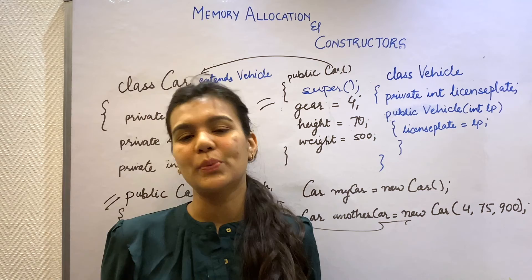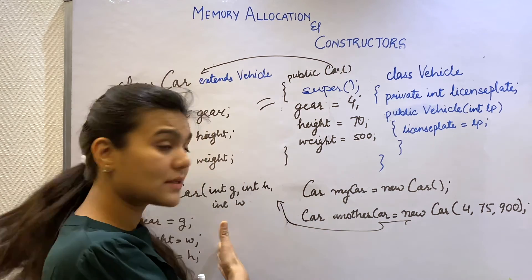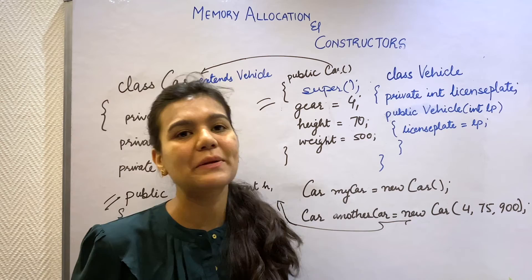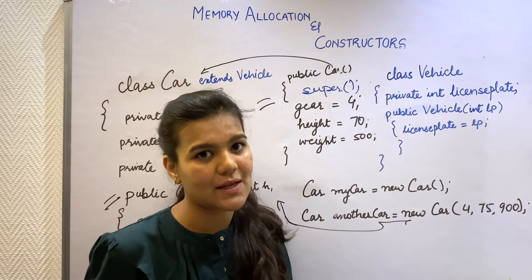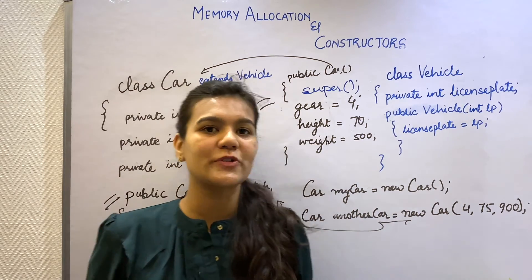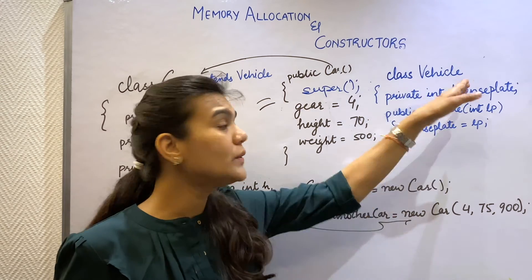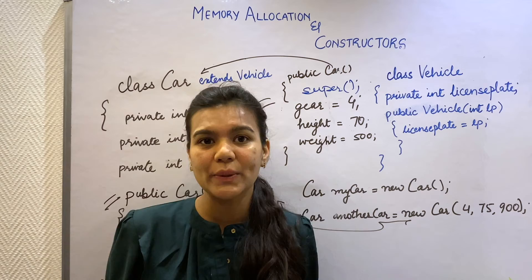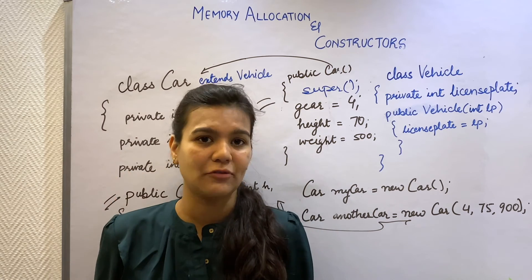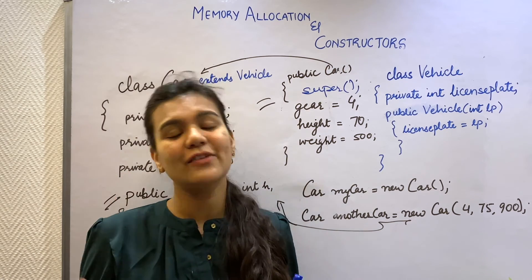Similar to how we had a parameterized constructor in my car class, I can also have a parameterized constructor in my vehicle class. But I'm not creating the object of my vehicle class. So how am I going to pass these values all the way up to my vehicle class? Well, I can do it from my car class object itself. But we'll understand everything through an example.